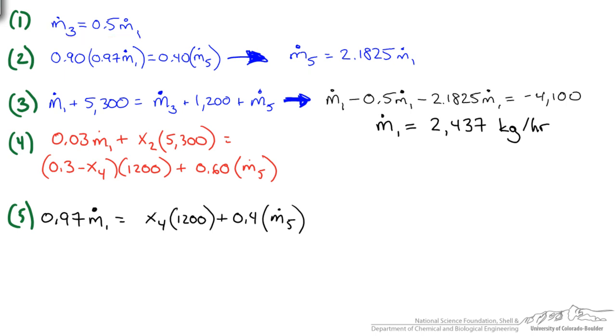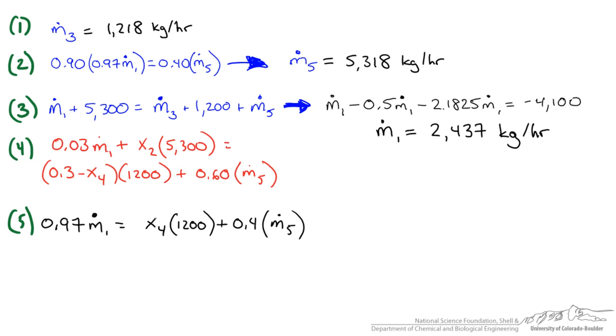I then plug my M1 values into equations 1 and 2, and I have solved for the mass flow rates that previously were unknown. At this point you can see it is just plug and chug. We could use M1 and M5 down here and solve for our unknown x4. Once we have x4 we can put that in here along with our M5 and M1 values and solve for x2.